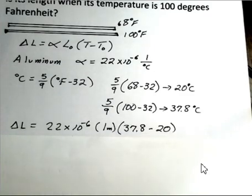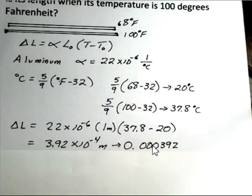So to do the delta L, we have the information we need. Alpha, L-not, T minus T-not. So the alpha number, the original length, and then 37.8 minus 20 gives us our temperature change of 17.8.